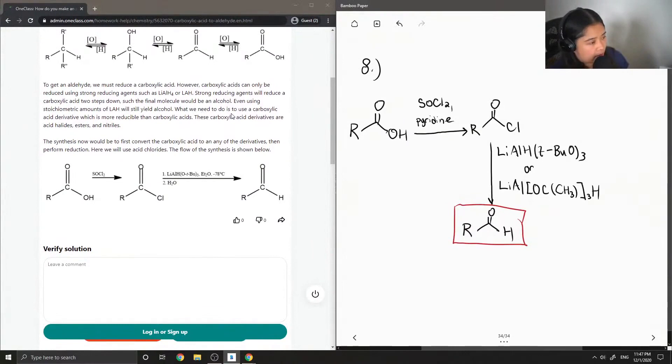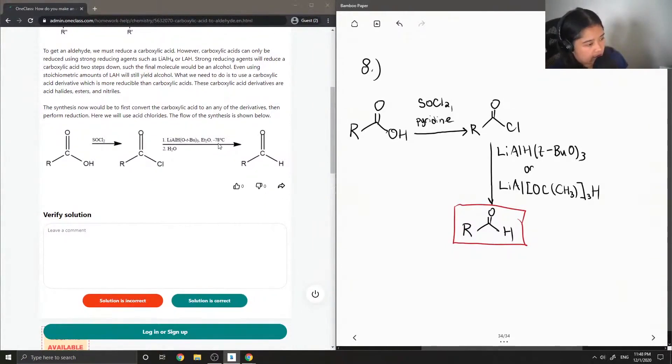What we need to do is to use a carboxylic acid derivative, which is more reducible than carboxylic acids. These carboxylic acid derivatives are acid halides, esters, and nitriles. The synthesis now would be to first convert the carboxylic acid to any of the derivatives, then perform the reduction. Here, we will use acid chlorides. The flow of the synthesis is shown below.